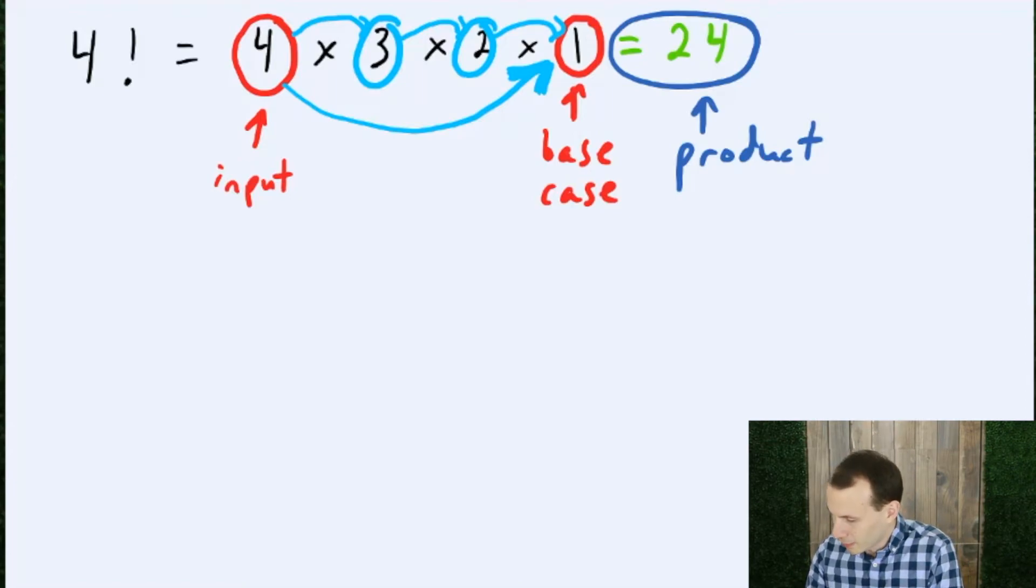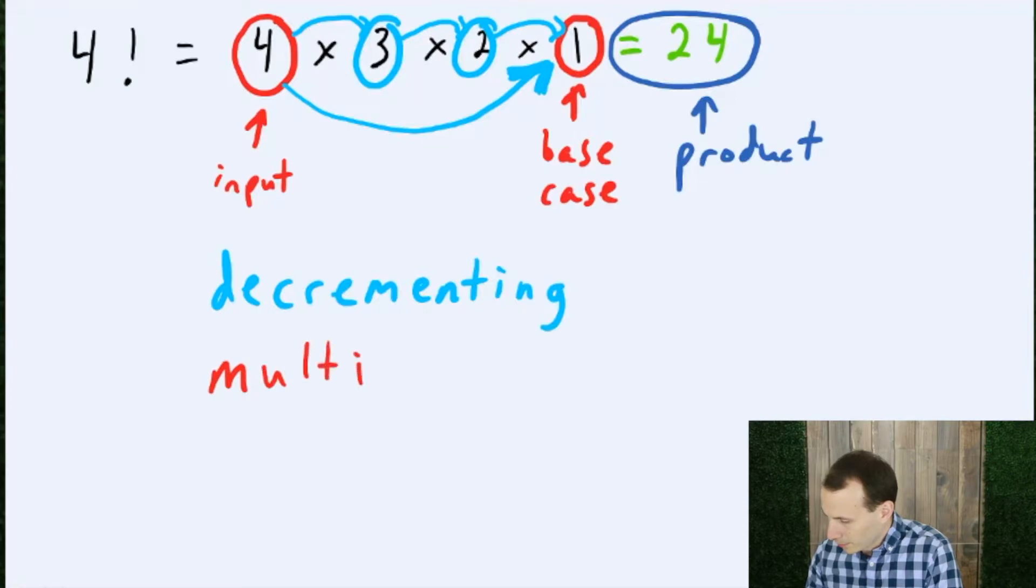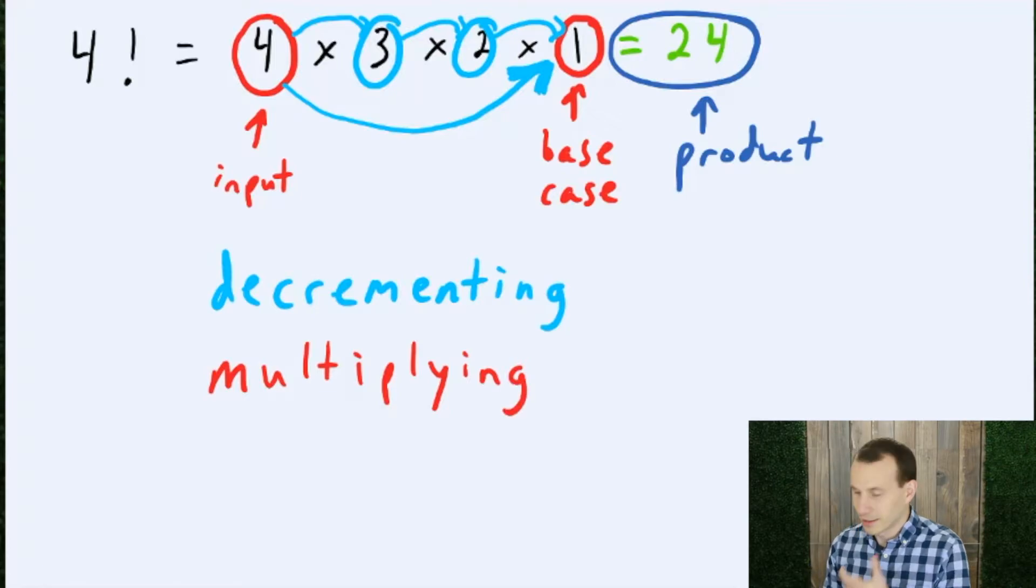One is that we are decrementing. In other words, we are just subtracting 1 from the input. And the second thing is that we are multiplying, so we somehow need to figure out how to decrement this value and multiply to build up a product in a way that gives us 24 for an input of 4.